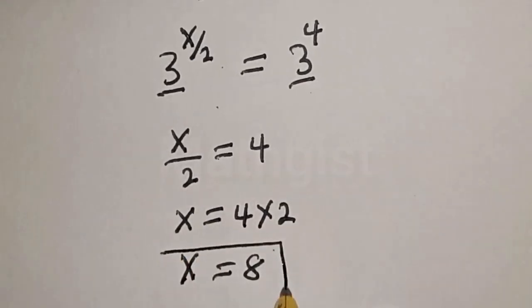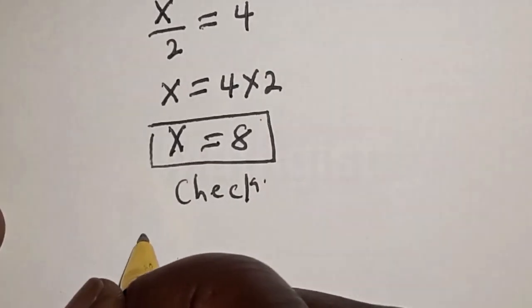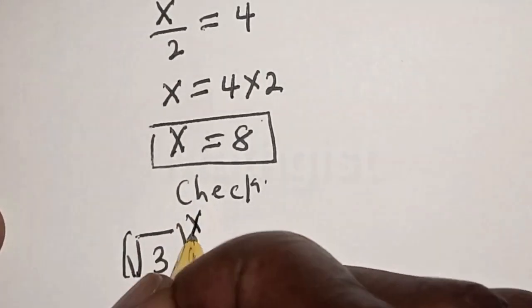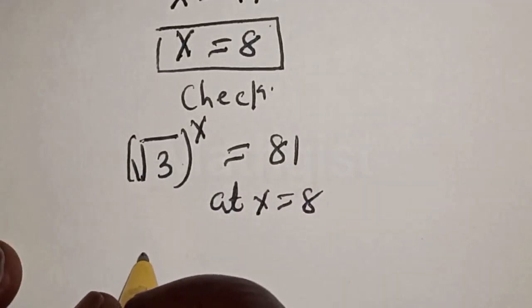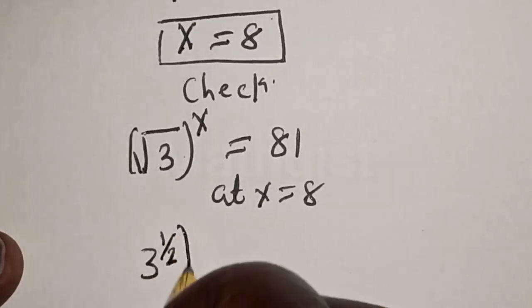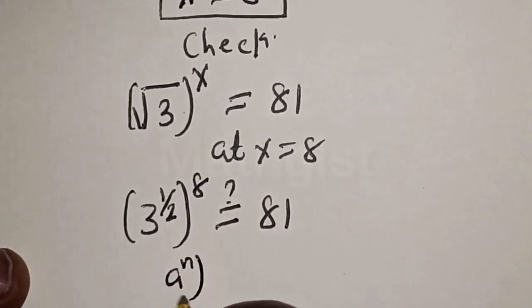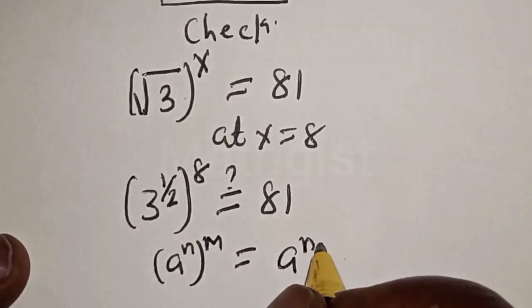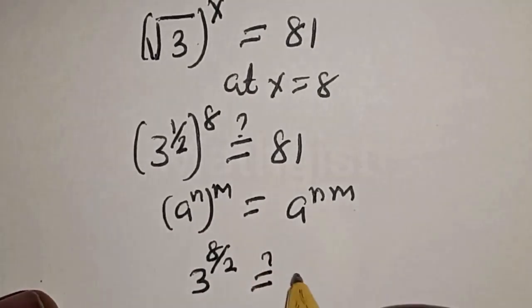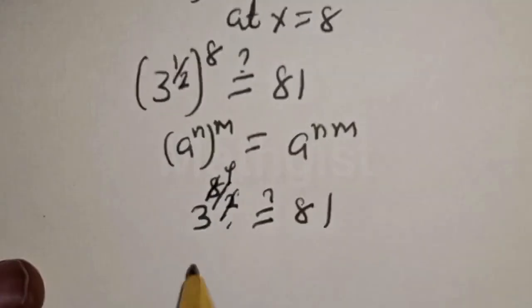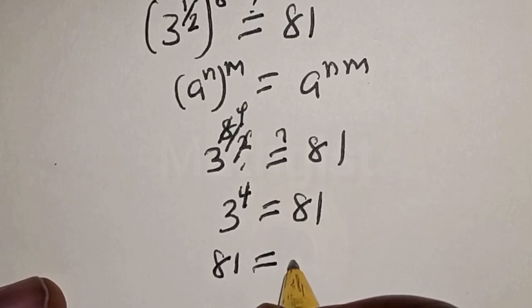That is our final answer. We can check to confirm if our answer is right. We have the given equation: root of 3 raised to power x must equal 81. Substituting x equals 8, we have 3 raised to power 1 over 2, raised to power 8, which becomes 3 raised to power 8 over 2, equal to 3 raised to power 4, which is 81. The left hand side 81 equals the right hand side 81, which satisfies the equation.